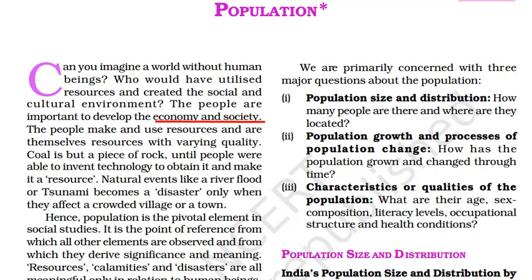What do we try to know in a census? There are three important points. One is the population size — how much population is in a particular region, how the distribution is, and where people are more or less concentrated.